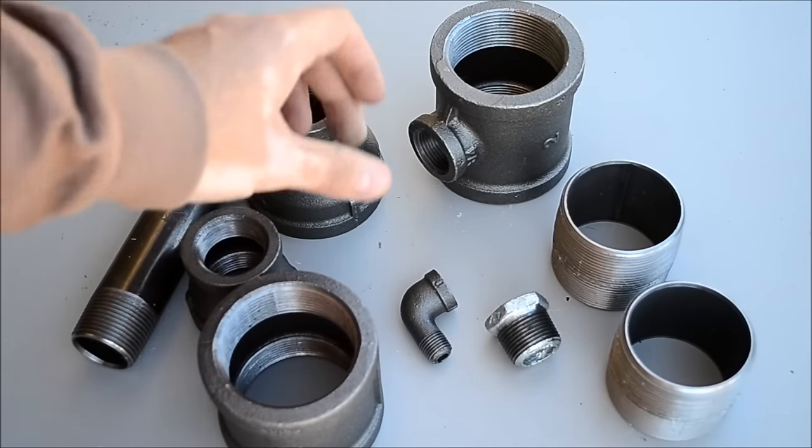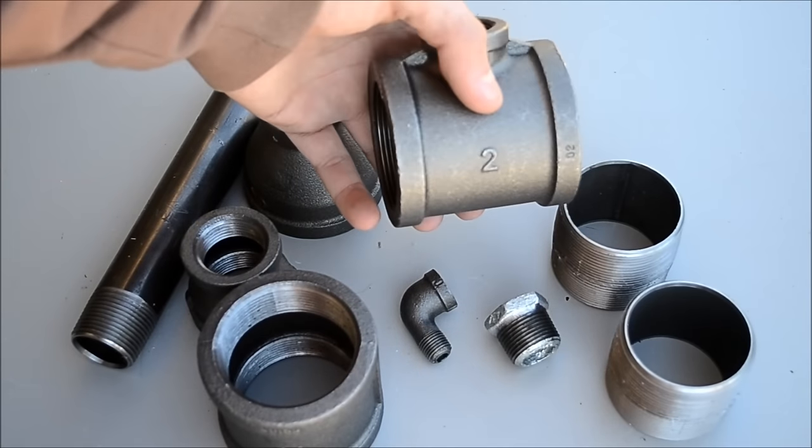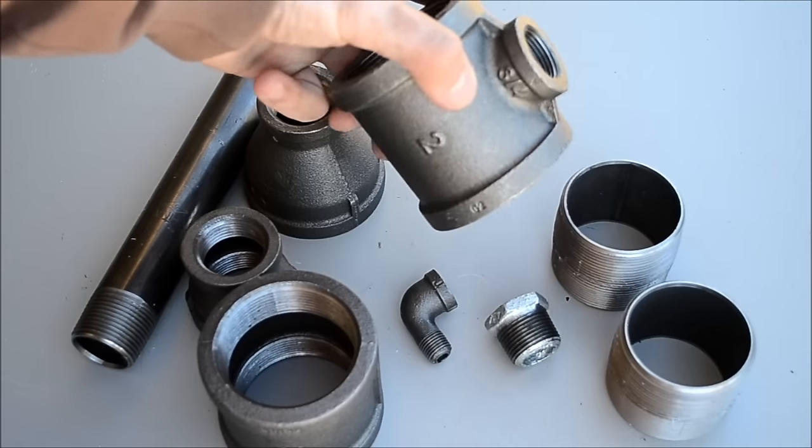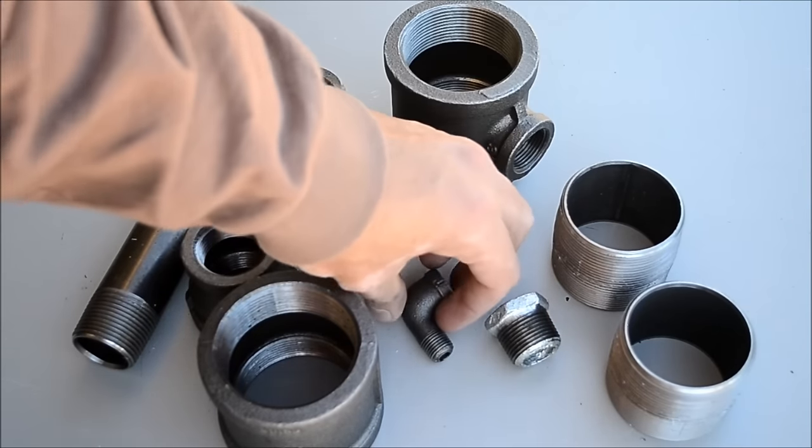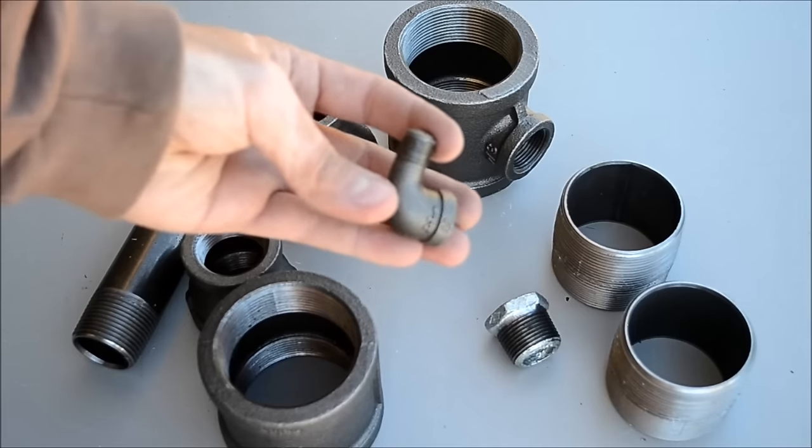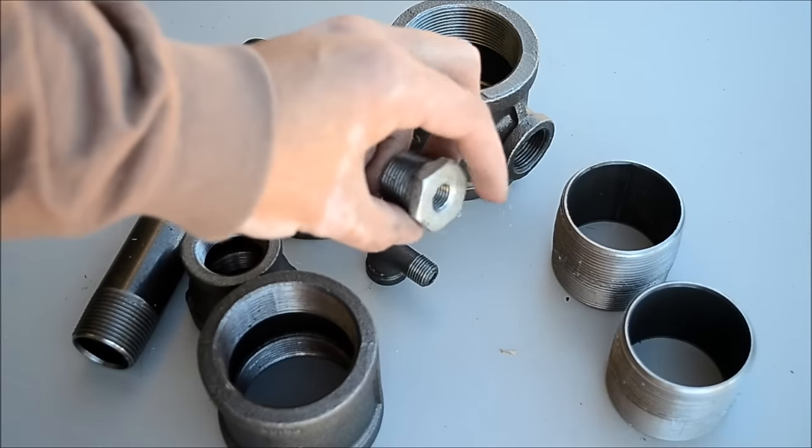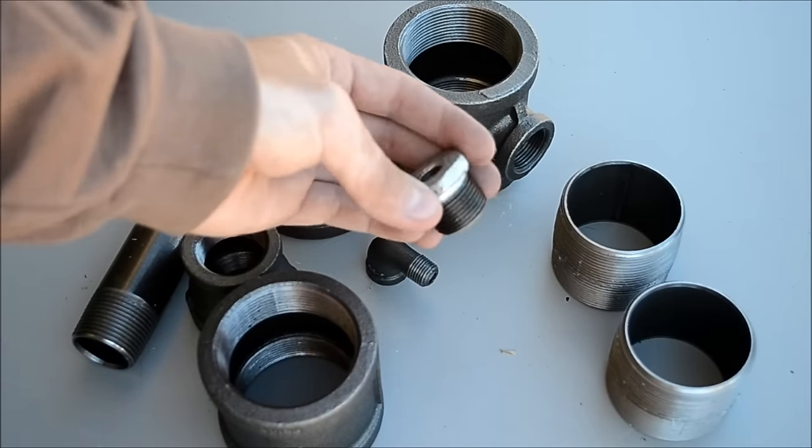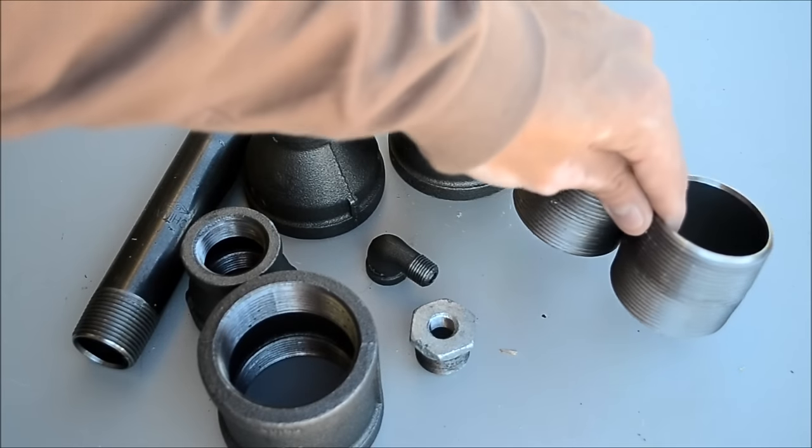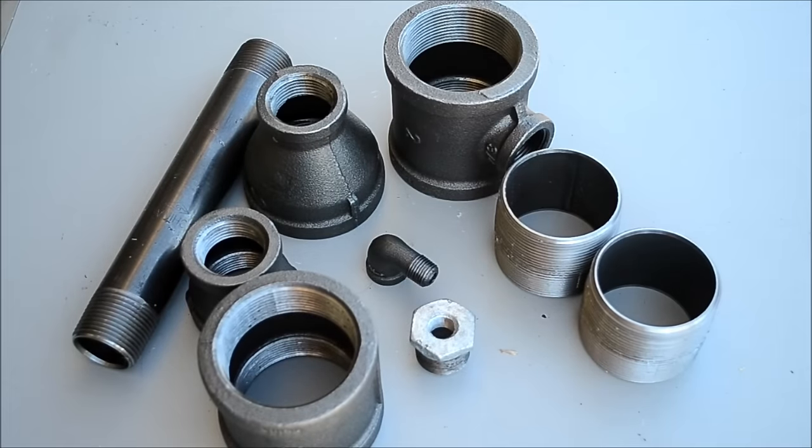That's for attachment to the forge, a 2 inch to 3 quarter inch coupler or a tee, a quarter inch street elbow, a 3 quarter inch to quarter inch hex, and two 2 inch nipples.